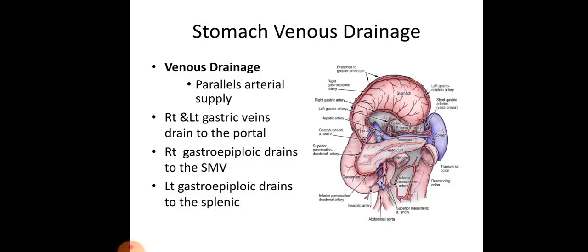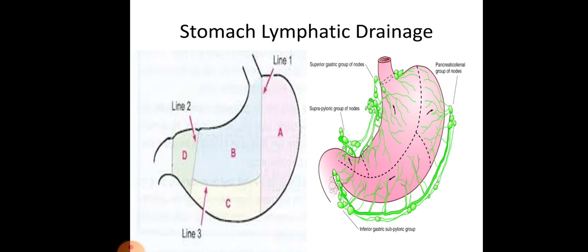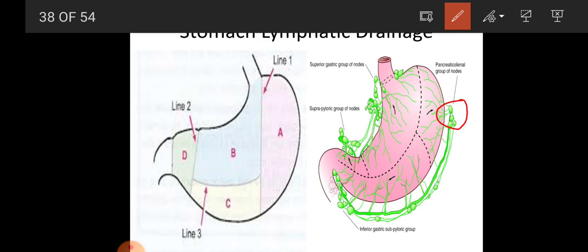The venous drainage: all arteries have corresponding veins which drain into the portal vein. For lymphatic drainage, the stomach is divided into four areas: area A drains into the pancreaticoduodenal group of lymph nodes; area B drains into superior gastric lymph nodes and suprapyloric group of lymph nodes; area C drains into the inferior gastric group of lymph nodes.